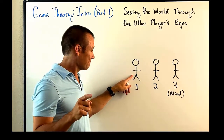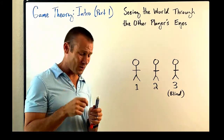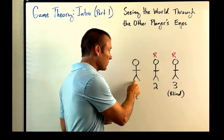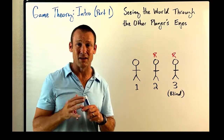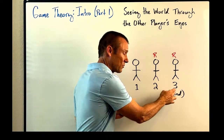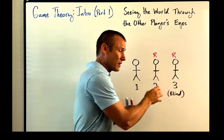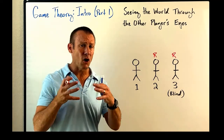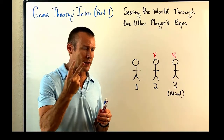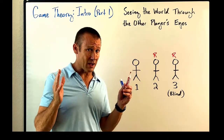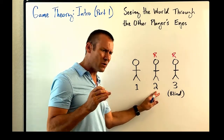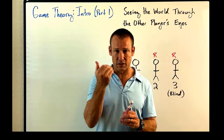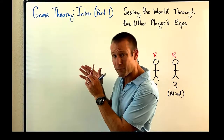He puts himself into prisoner one's shoes. Here's what he knows: if prisoner one would have seen red and red on the other two prisoners — remember, there are three blues and two reds — prisoner one would have said, I've got a blue hat, I know I've got a blue hat. So prisoner three found something out: prisoner two and prisoner three do not both have red hats. Prisoner two found that out too. If prisoner one would have seen red and red, they would have said they had a blue hat — that's pretty straightforward.